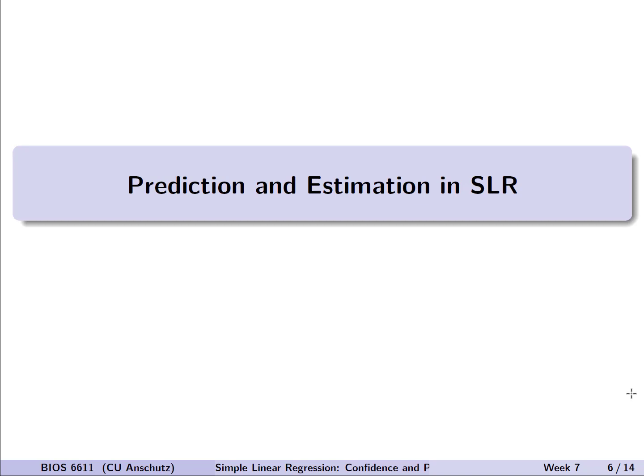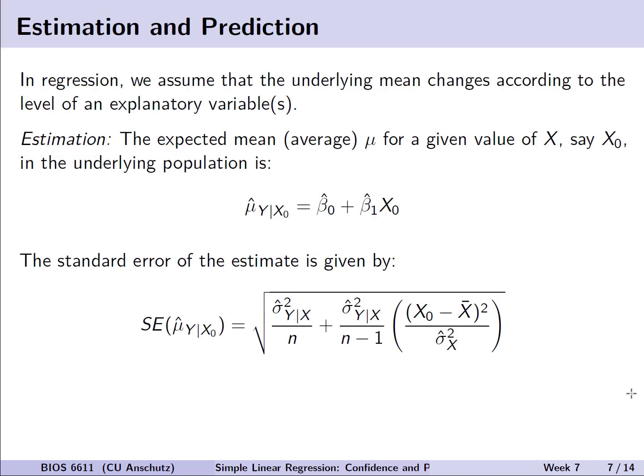And so with that background, let's turn our attention to how we can leverage these concepts and see them in action in simple linear regression. So in our regression context, we assume that the underlying mean changes according to the level of an explanatory variable or variables once we move into multiple linear regression.